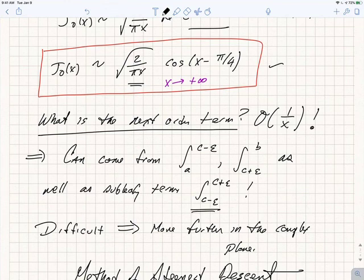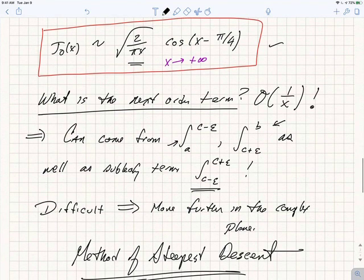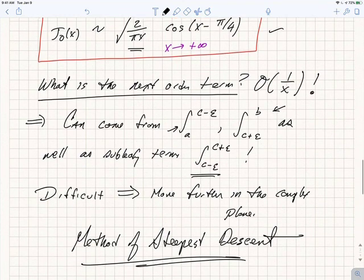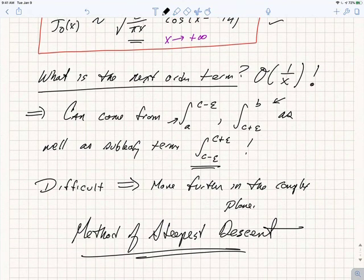It can come from the sub-leading pieces of the expansion around the stationary point, but it can also come from the endpoint behavior of the other parts of the interval, from a to c-ε or from c+ε to b. So while the stationary phase approximation is very physical and the leading term is straightforward to compute, it's difficult to generalize to cases where you want sub-leading terms.